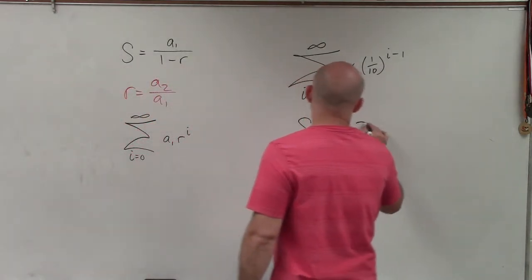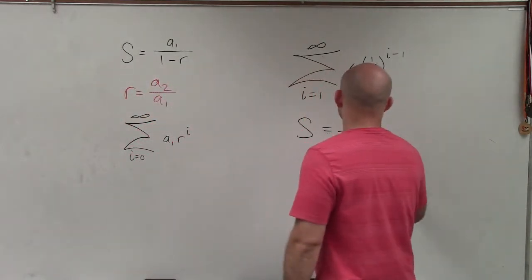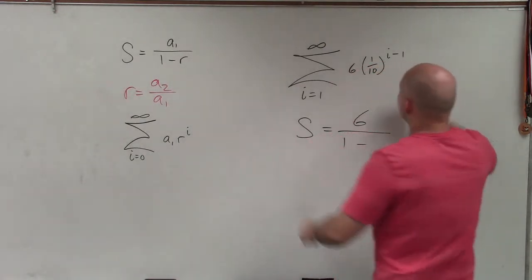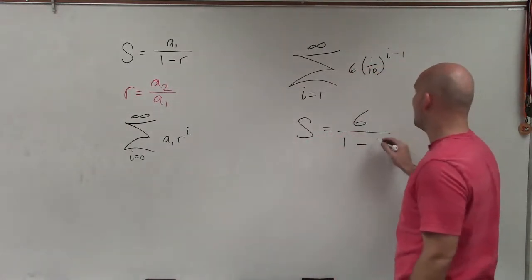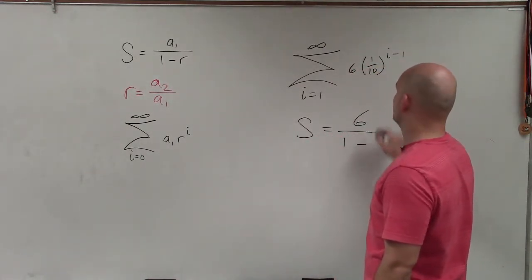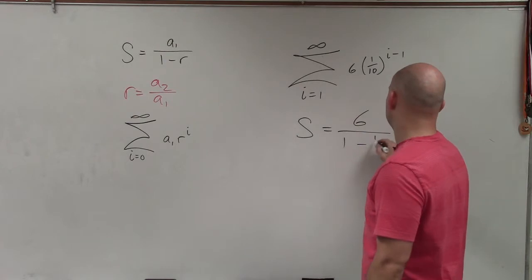So S equals 6 divided by 1 minus, and again, our r is just going to be what's raised up to our i, which is 1 tenth.